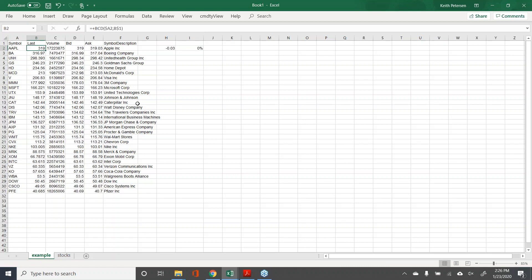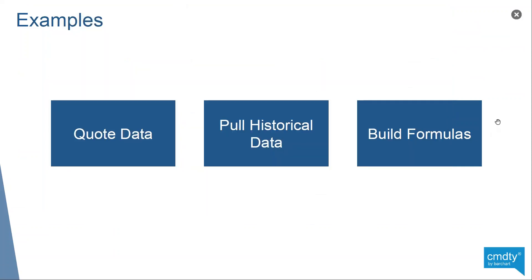I can do calculations off this. For example, here's the bid-ask spread — I can take that and divide by the last price to get the percent difference between the bid-ask spread and the last price. So I can see this is a pretty tight market — it's basically zero, pretty impressive with the stock trading at $319. As you can see, really fast, really impressive, really powerful. You can pull quote data using our quote dialogue, pull historical data using the time series function, or build your own custom formulas — whether you want to use the prebuilt dialogues or do stuff on your own, you can do whatever you want. That's the beauty of it — it's completely flexible.